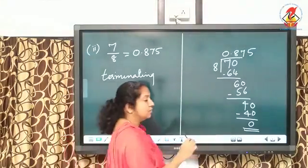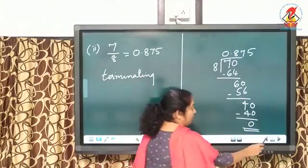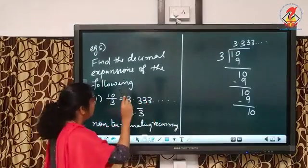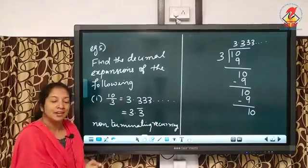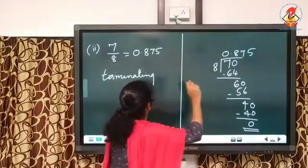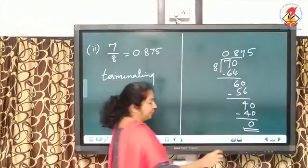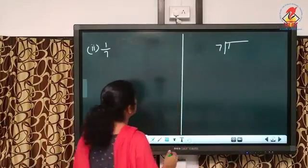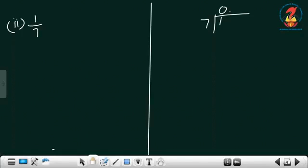The first one, 10 by 3, was non-terminating recurring; this one, 7 by 8, is terminating. So the decimal expansion of the first rational number is non-terminating recurring, and the decimal expansion of this rational number is terminating. Next, the third one is 1 by 7.